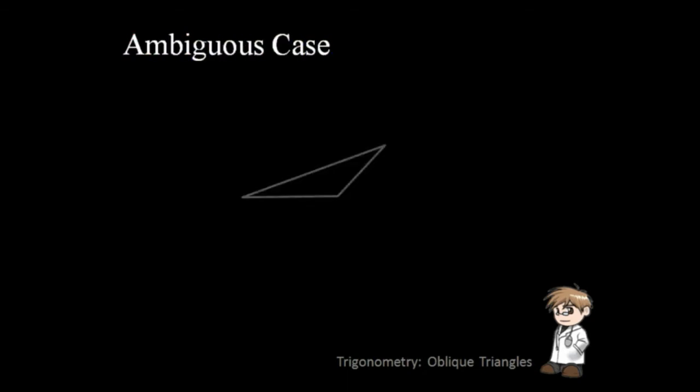For example, this triangle. We do not know whether this is the valid triangle or this one. So we solve for the two triangles.